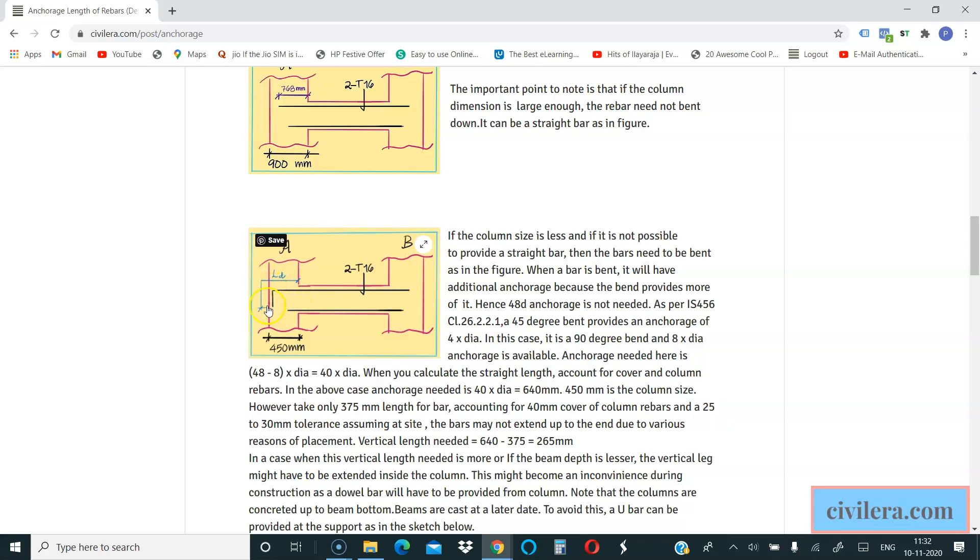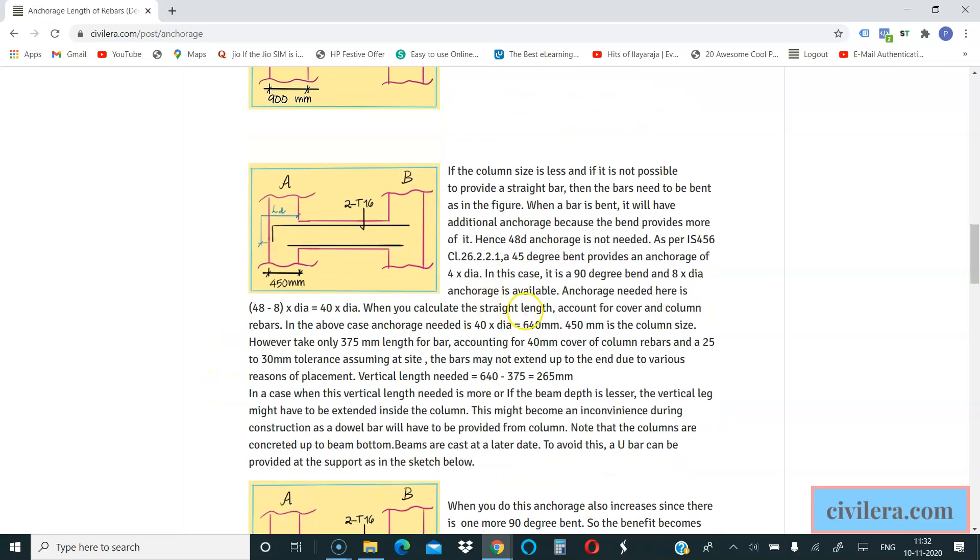Because of that reason, the total length can be reduced. So the calculation and an example I have mentioned here. The code says that maximum you can take 16 times diameter as the benefit from the bend. It's as simple as this: assume a bucket in which you have put say sand and you are putting a rod inside that and pulling it out. Now when you have a bend in the rod at the end, it will be more difficult to pull it out simply because it has more anchorage because of the bend. The same thing, you have more bond when you have a bend.